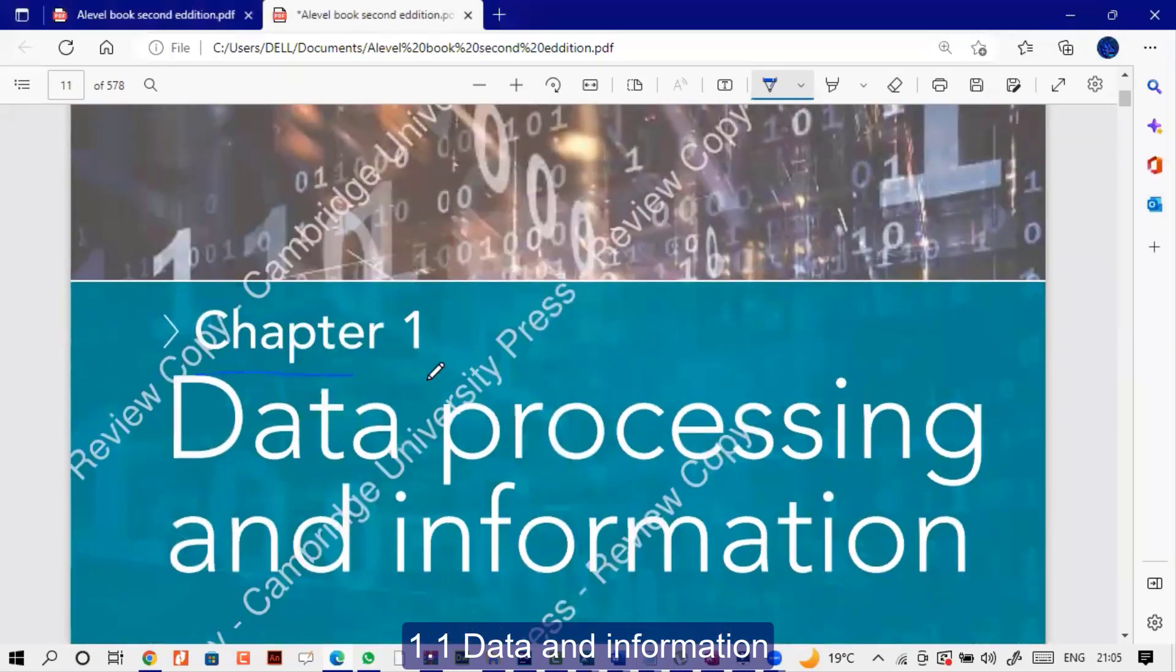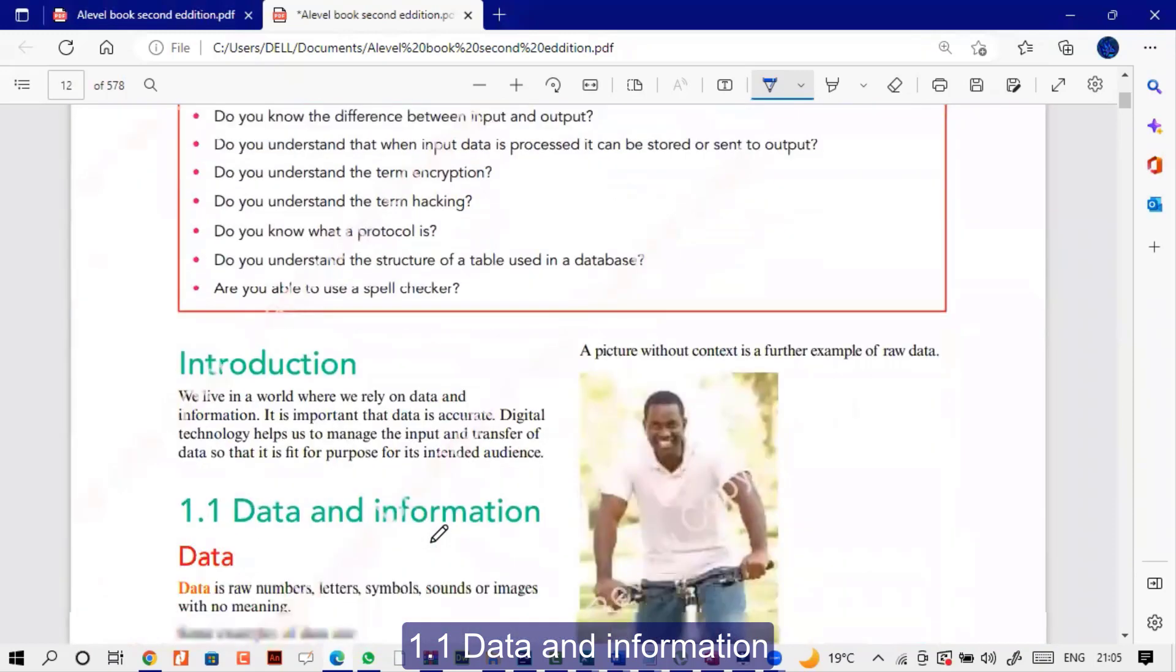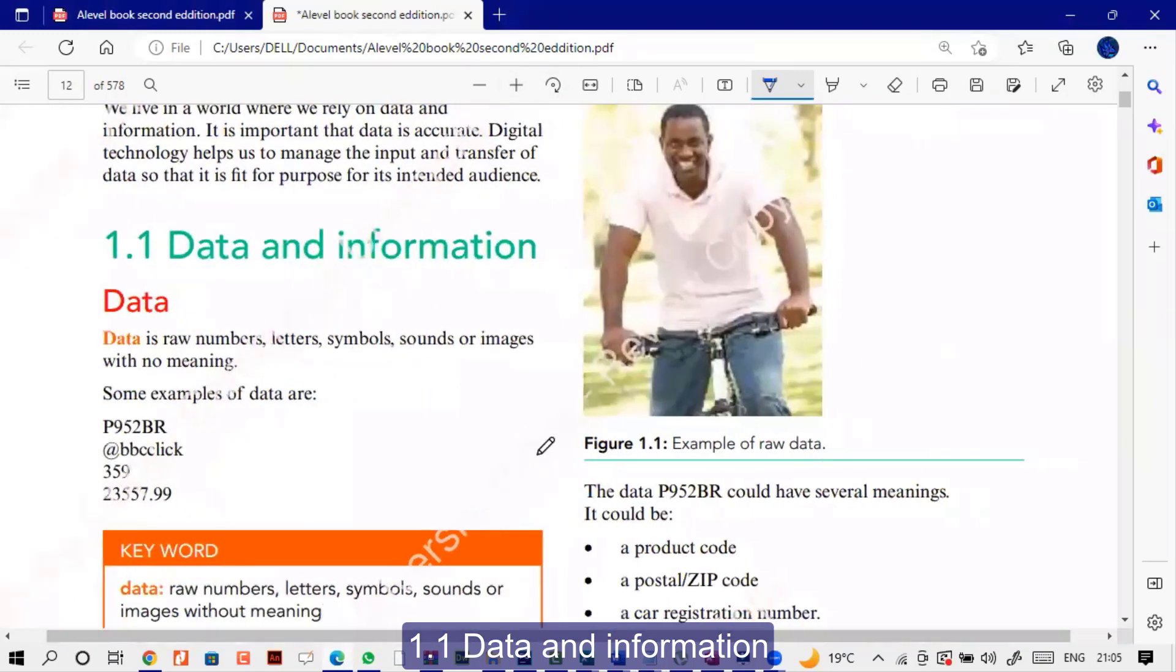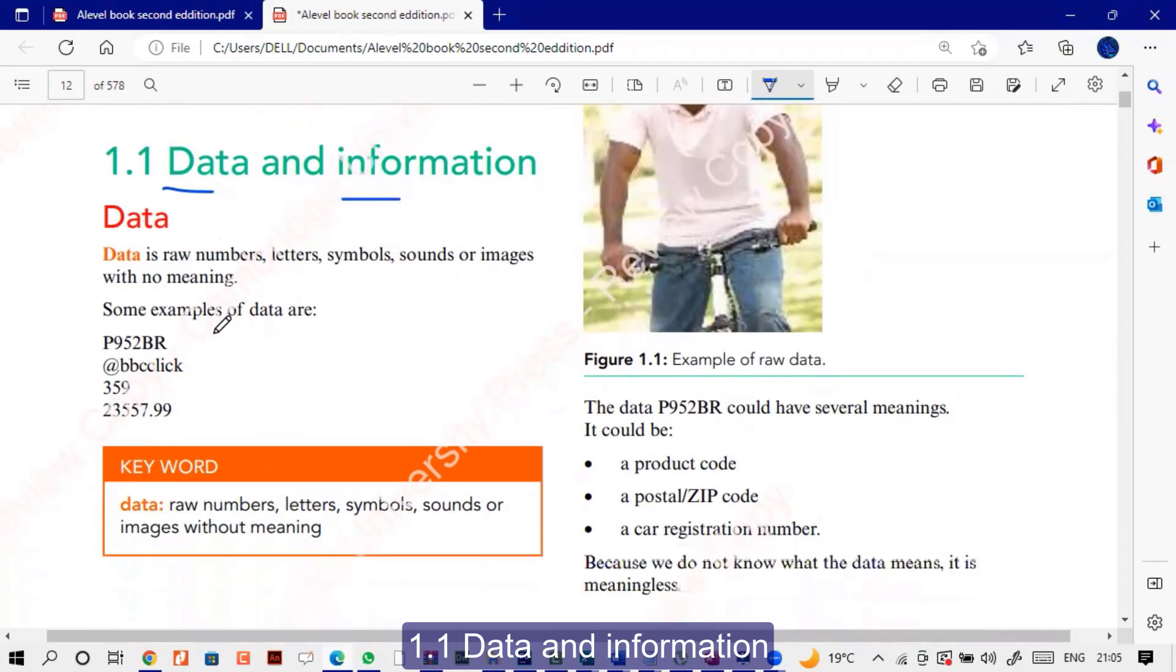The first chapter we are going to discuss is chapter 1, data processing and information. Now obviously data is everything in business. This is why cloud computing is one of the most important things. Organizations are saving their data in the cloud. This is why data engineers and data scientists are very importantly required in every organization. So we are going to talk about data and information, a very basic thing.